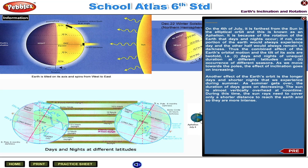It is because of the rotation of the Earth that days and nights occur. If not, one portion of the Earth would always experience day and the other half would always remain in darkness. The combined effect of the Earth's orbital motion and the tilt of its axis are twofold: days and nights of unequal duration at different latitudes, and the occurrence of different seasons. As we move towards the poles, the effect of inclination goes on increasing.